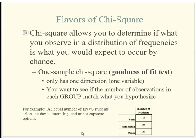This is called a one-sample chi-squared goodness-of-fit test — you're asking how well your observed counts fit the expected counts. As an example: if you're an environmental studies student, you have three capstone options — a thesis, an internship, or an external minor. We have the counts of the number of students who selected each of those, and we could test whether there's an even number of students in each option.